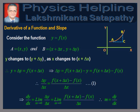Derivative of a function and slope. Consider a function y = f(x), whose graph is shown in the figure. Let the coordinates of A be (x, y), which change to (x + Δx, y + Δy) at B. Therefore, we have y + Δy = f(x + Δx), or Δy = f(x + Δx) − f(x), which implies Δy/Δx = [f(x + Δx) − f(x)] / Δx. Since AB is not a straight line, Δy/Δx cannot represent the slope tan θ.